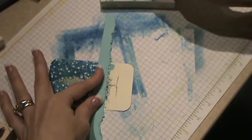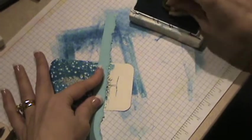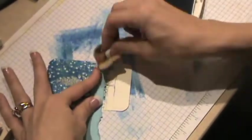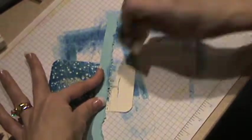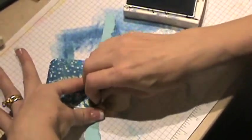I've grabbed Brocade Blue and a Stampin' Sponge and I'm just going to really try and get a lot of color next to that torn edge there.